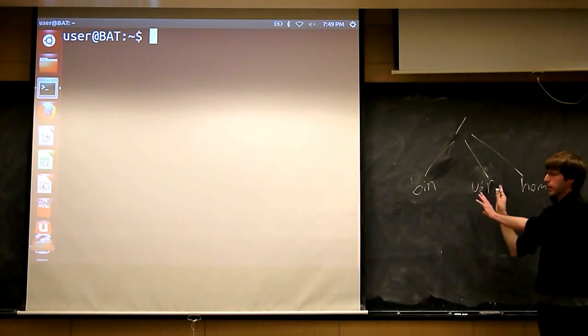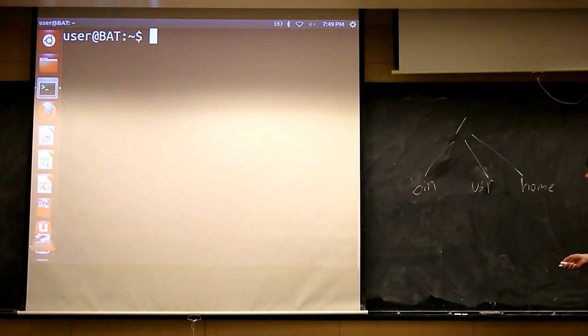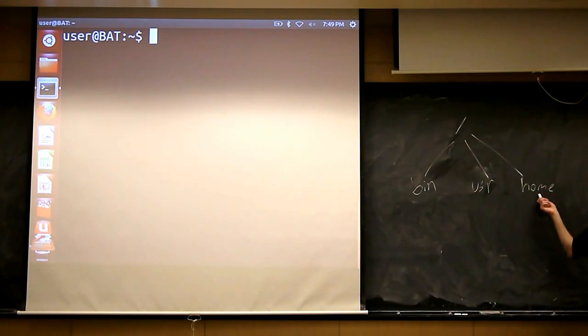Most of these deal with storing files for the operating system and more advanced things that we will be getting into. What we're going to care about is the home folder. This home folder is where the home folder for each user lives. On the virtual machine there's one user whose name is user. Inside the home directory there's another directory called user, and inside the user directory is where all of your user stuff is - like Dropbox, documents, music, and so forth.